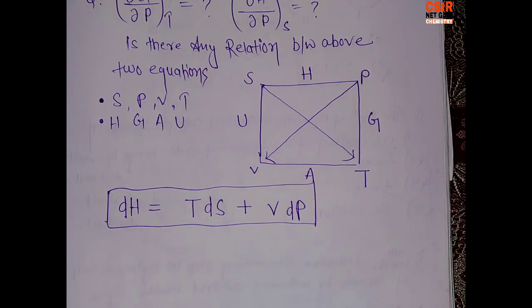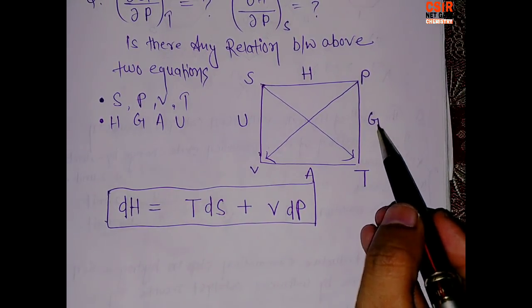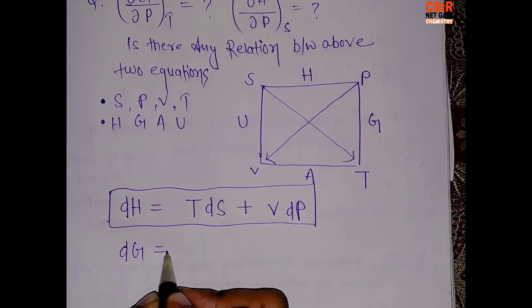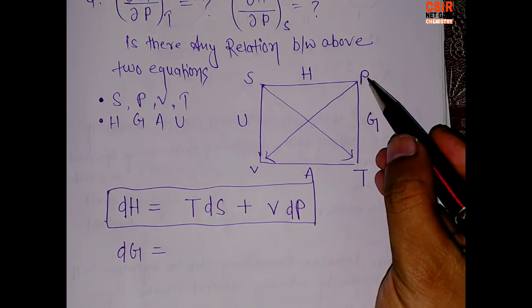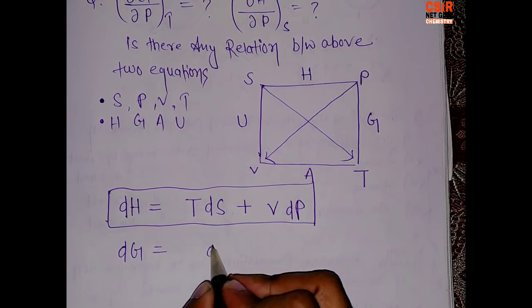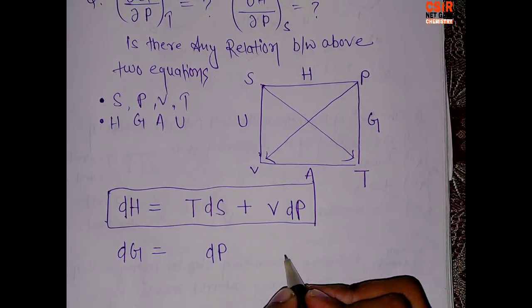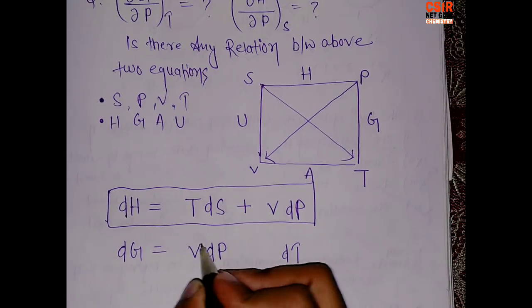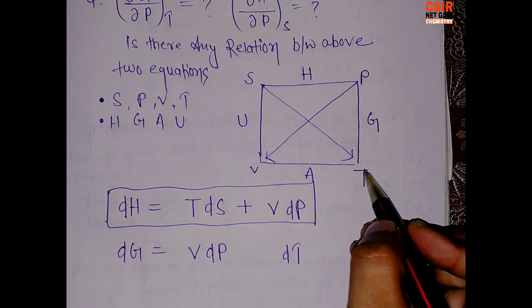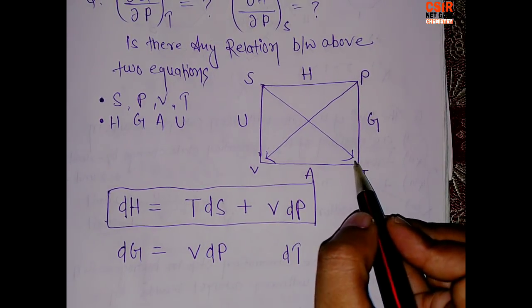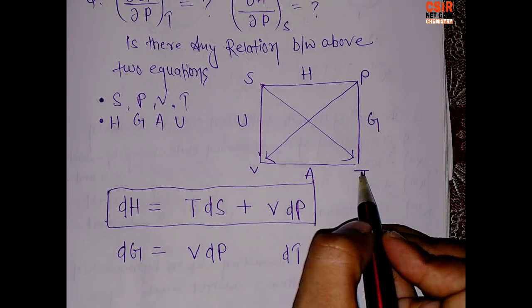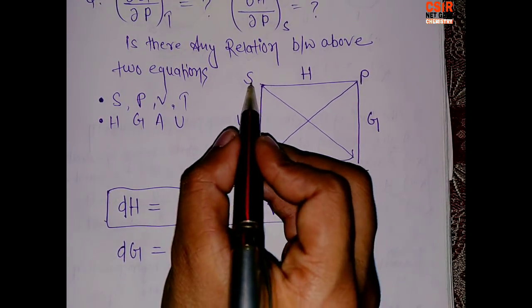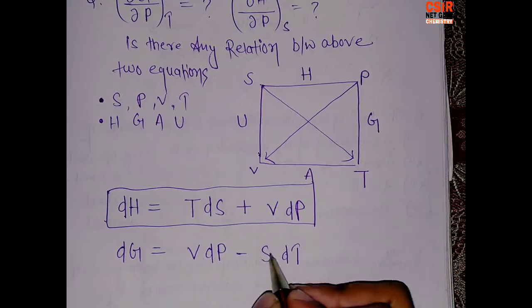So dH = T dS + V dP. Similarly for Gibbs free energy: dG — G comes between P and T, so write dP and dT. From P, the arrow goes to V, giving V dP. From T, the arrow terminates on T, meaning it carries a minus sign and comes from S, giving minus S dT.